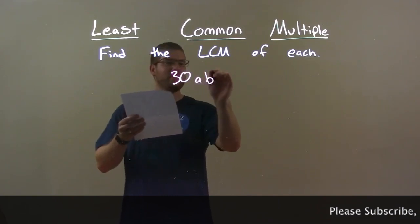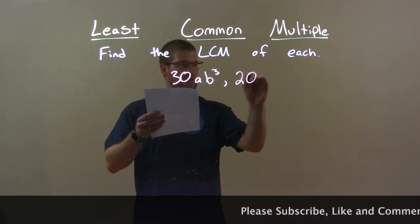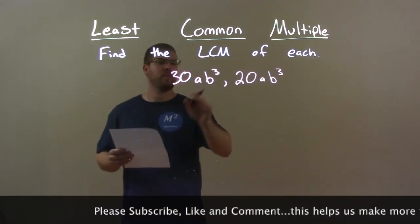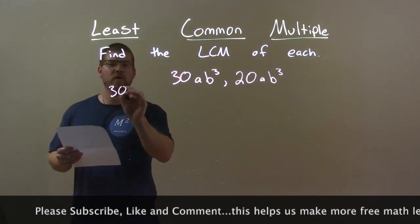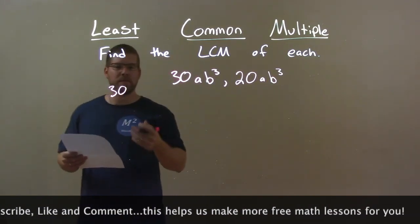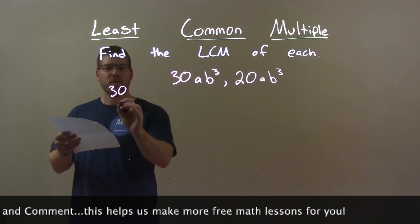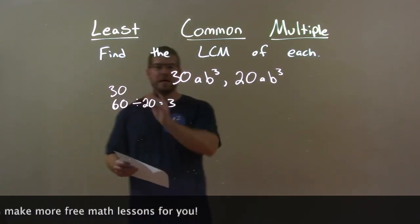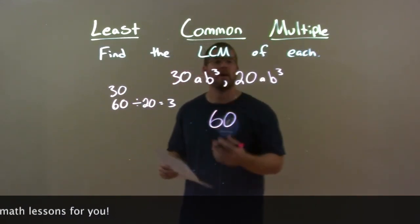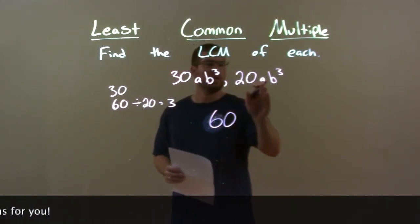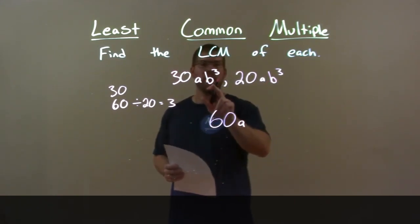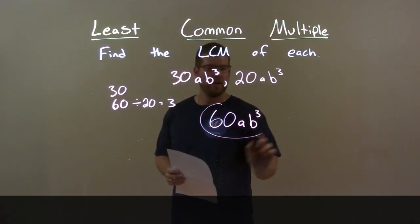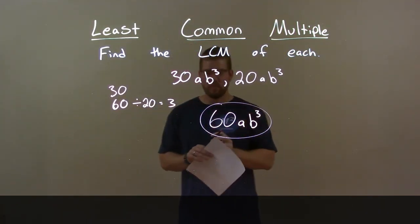30ab to the third power and 20ab to the third power. I first start with my numbers — my largest is 30. I go through its multiples to see which one is divisible by 20. 20 does not go into 30, but 20 goes into 60 — three times. So 60 is the number I'm looking for. For the variables: I have 1a here and 1a there, so just a. Both have b to the third power. My final answer is just 60ab cubed.